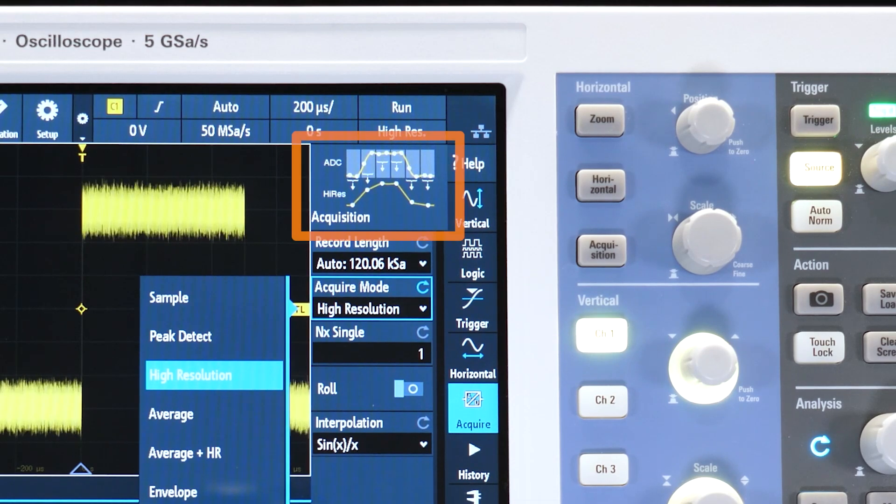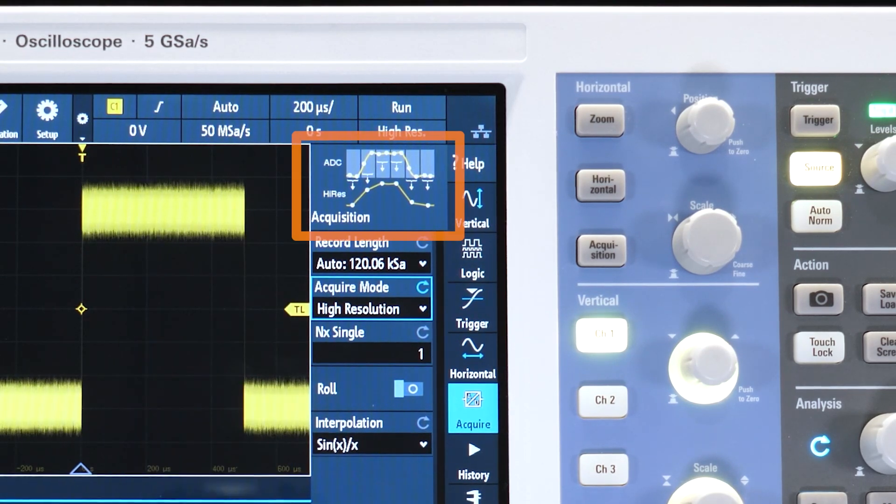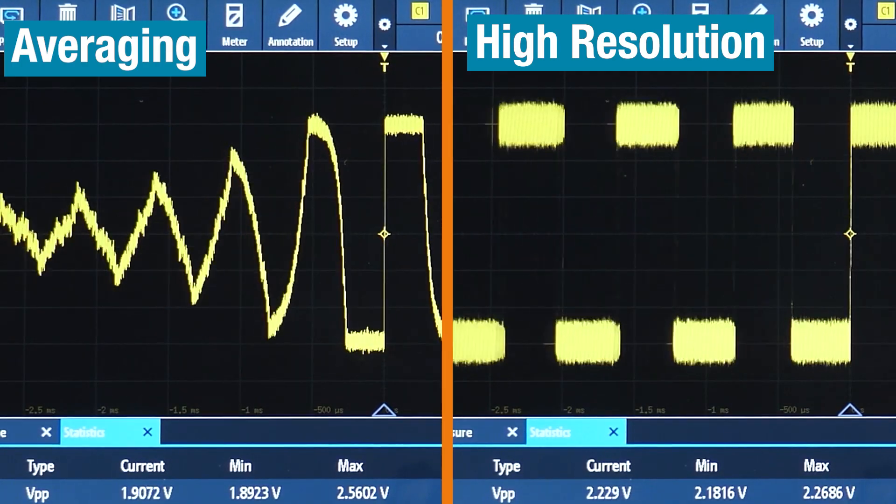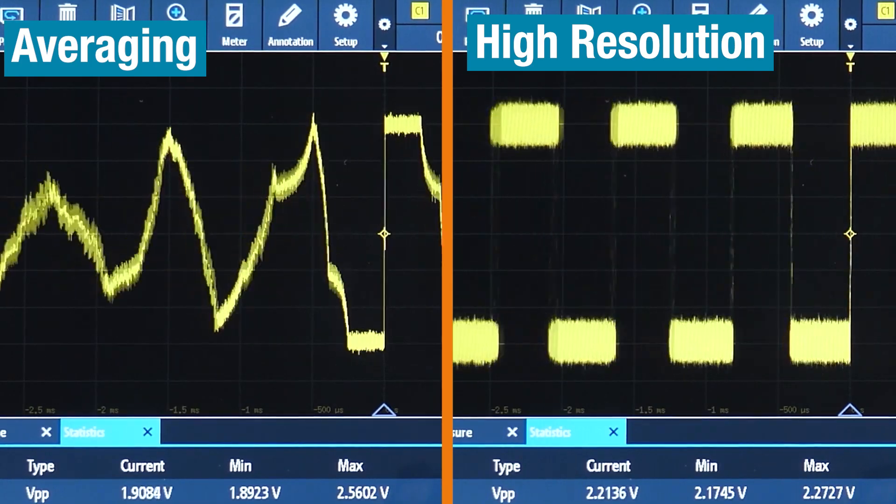It works by taking consecutive samples, averaging them together, and creating a new sample point. It's like a boxcar average that runs continuously, which is why it handles this particular signal better than averaging the entire waveform.